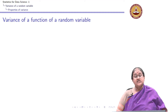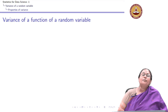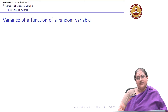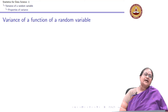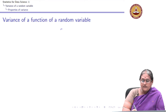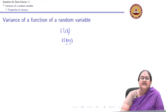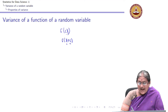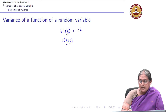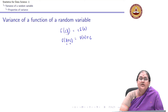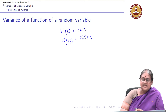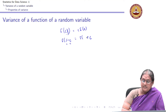Let us look at a few properties of the variance of a random variable. Recall when we wanted to look at properties of expectation, we saw what is the expectation of a constant times a random variable, and what is the expectation of a constant plus a random variable. Now let us continue with the same exercise for the variance of a random variable.